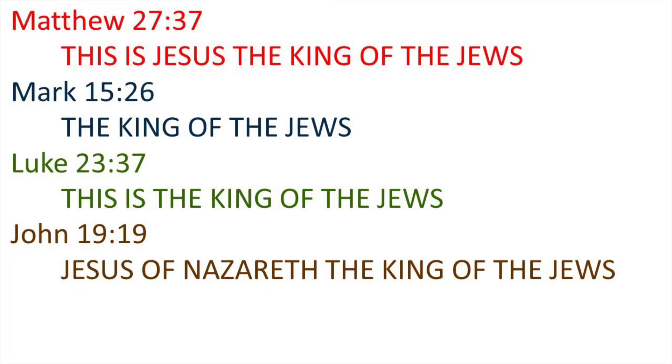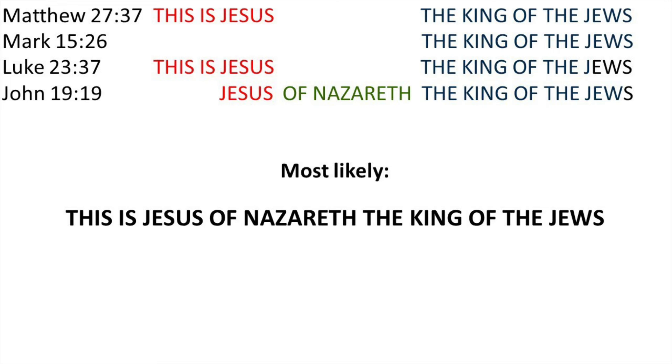Looking at how the other Gospels record the inscription: Matthew 27:37 says 'This is Jesus the King of the Jews,' Mark 15:26 says 'The King of the Jews,' and John 19:19 says 'Jesus of Nazareth the King of the Jews.' Even though the four Gospel authors wrote different inscriptions, I don't believe there's a discrepancy — all are correct but not all are complete. Putting them together, the complete inscription was probably: 'This is Jesus of Nazareth the King of the Jews.'